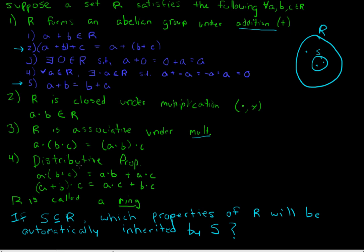And the distributive property: same story. This is dependent upon both operations at the same time. These are both binary operations, and the distributive property holds on both of them.